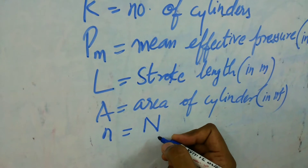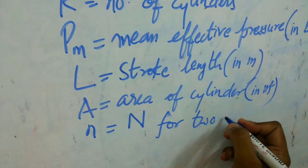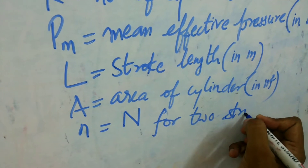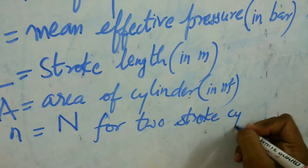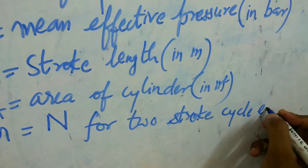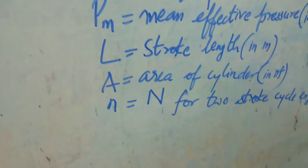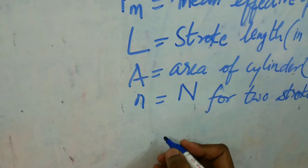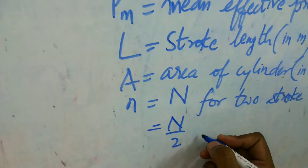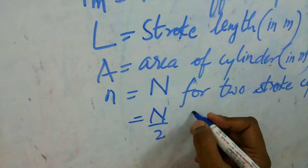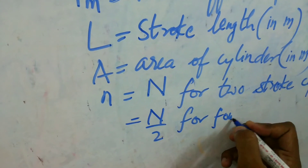Small n is equal to capital N for a two-stroke cycle engine, where N is RPM. For a four-stroke cycle engine, small n will be equal to N divided by 2.